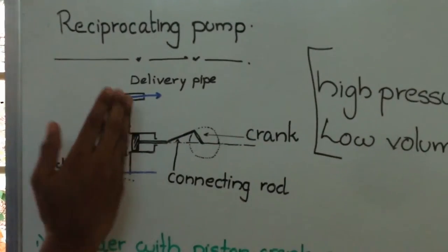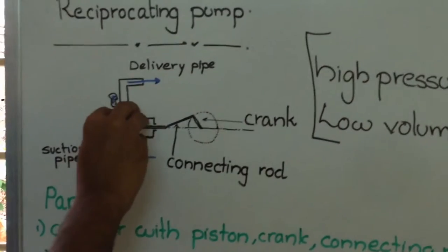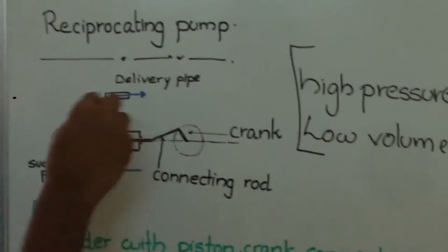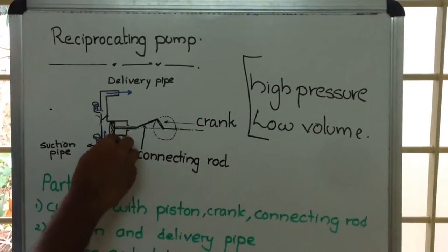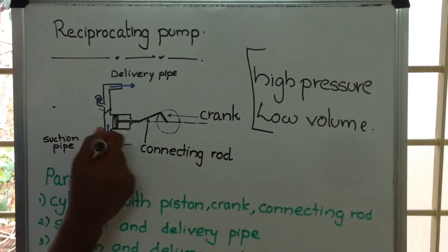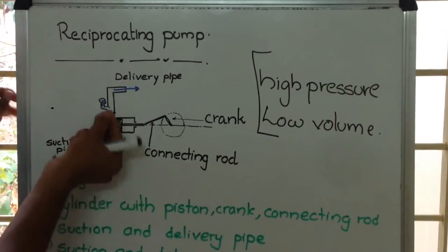As the piston moves to the right side, a partial vacuum is created inside the cylinder. At the suction, atmospheric pressure is present. Since this atmospheric pressure is greater than the partial vacuum inside the cylinder, it pushes water through the suction pipe into the cylinder.